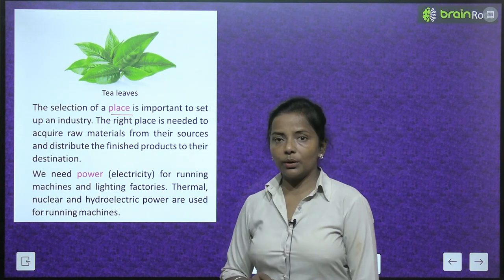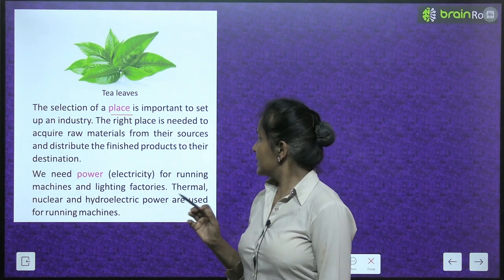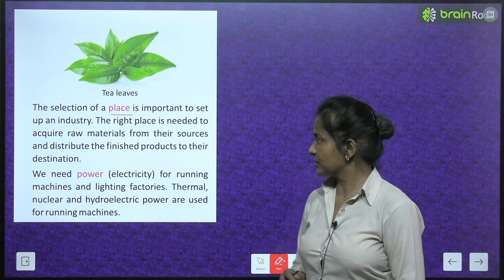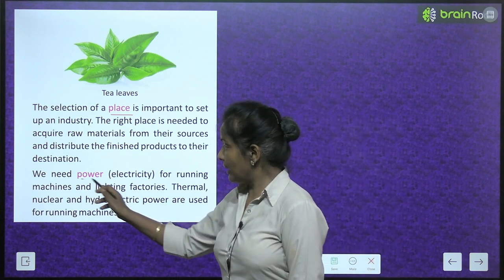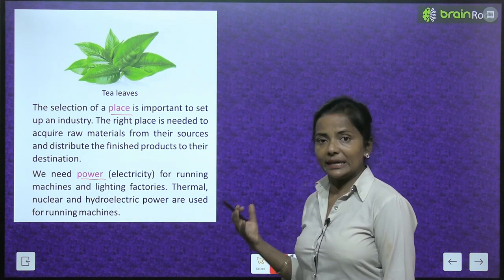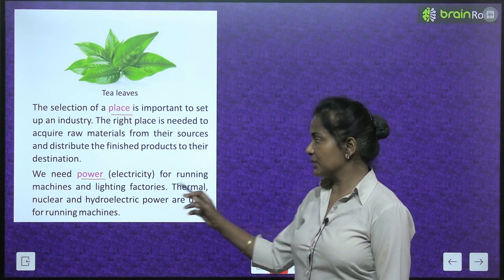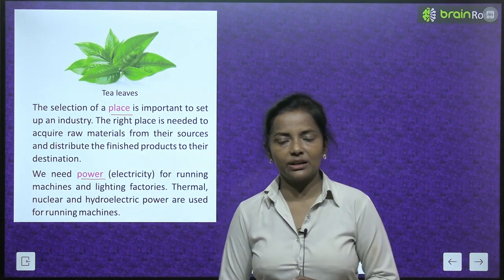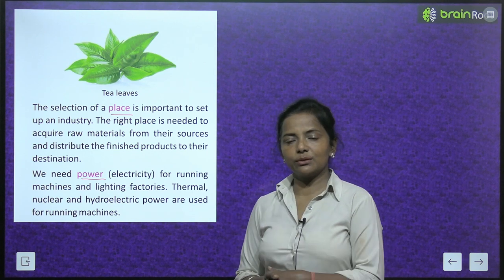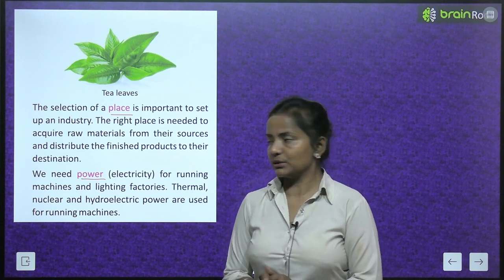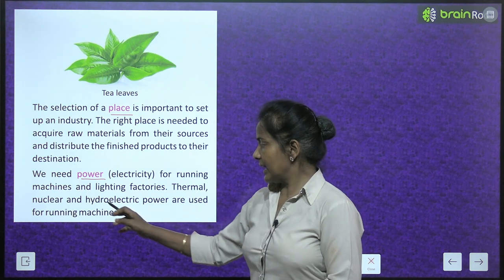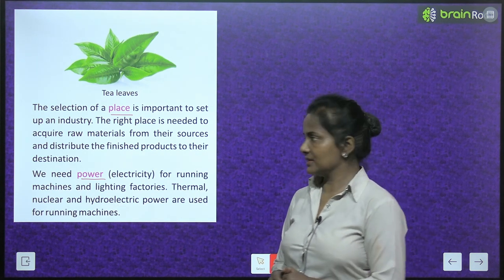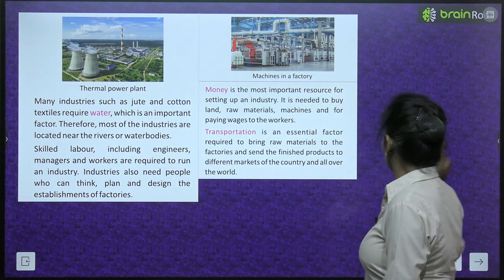We need power — that is, electricity — for running machines and lighting factories. Thermal, nuclear and hydroelectric power are used for running machines. This is a thermal power plant.